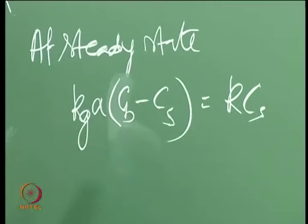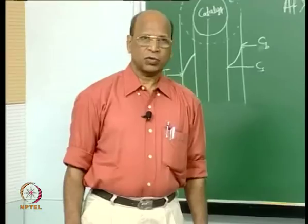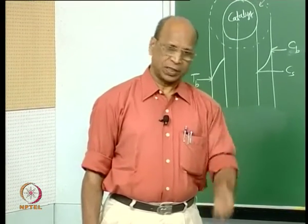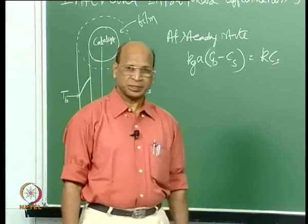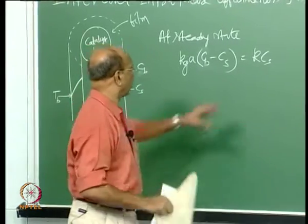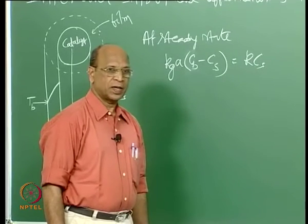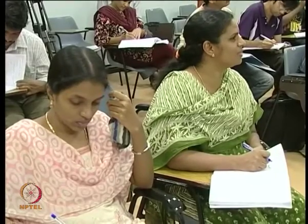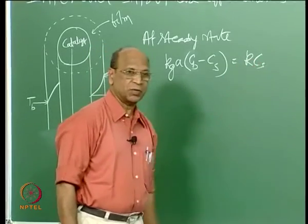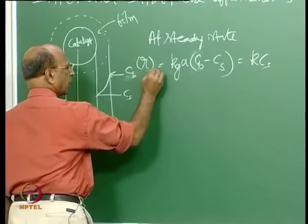What will be the units of K, without A and with A? For a first-order reaction, the rate must have units consistent with how we define it. For catalytic reactions, if we define rate as moles per second per kg catalyst, the dimensions of K_G · A and K must match accordingly. If the rate is expressed as moles per second per cm² of catalyst surface, then K_G has units of meters per second.